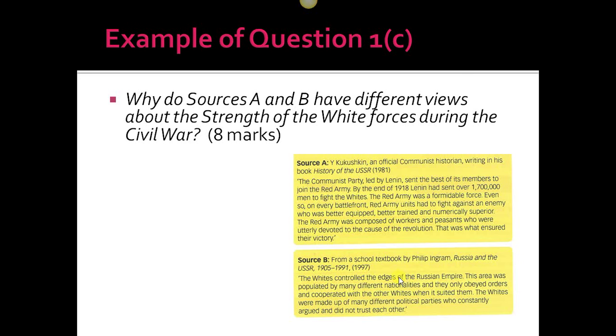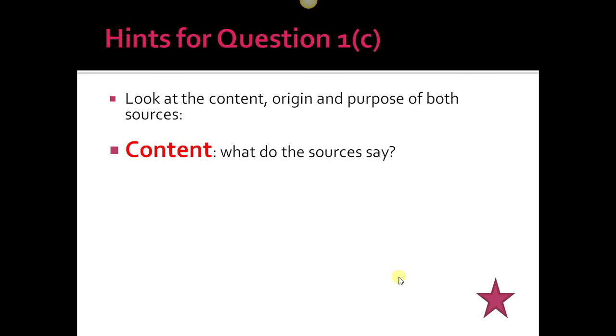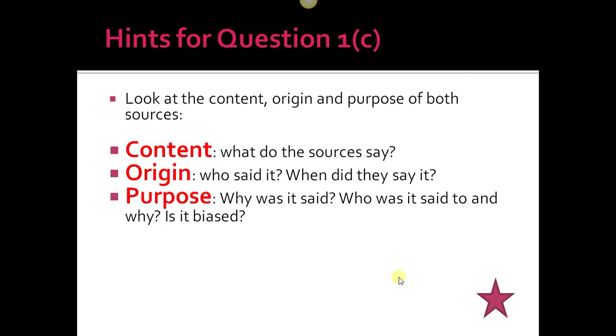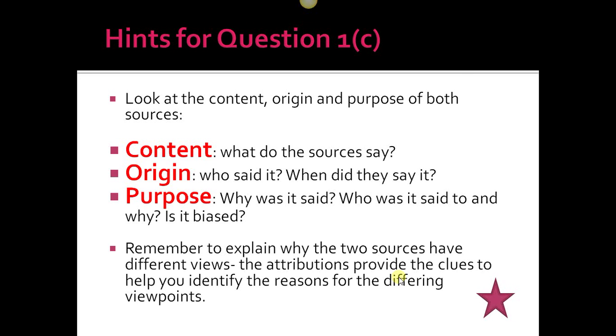Hints for Question 1c: Look at the content, origin, and purpose of both sources. COP: Content—what do the sources say? Origin—who said it, when did they say it? That's the attribution. Purpose—why was it said, who was it said to, and why is it biased? Remember, it's viewpoint. Explain why the two sources have different views. The attributions provide clues to help you identify the reasons for the different viewpoints. Another example you can find in the Hodder book is how Lenin would write the October Revolution as opposed to Trotsky's view.